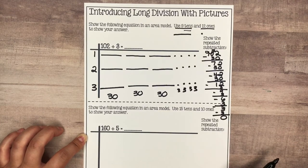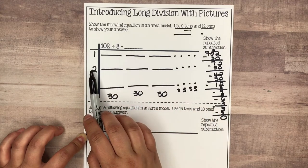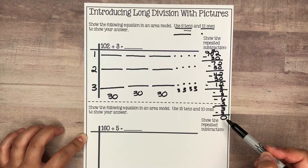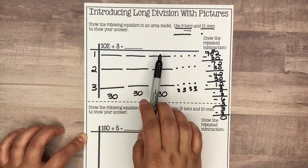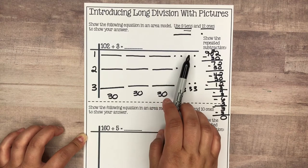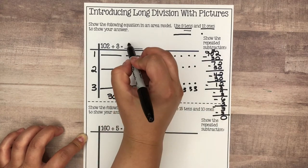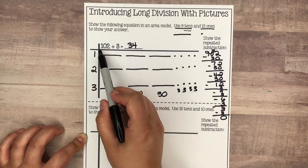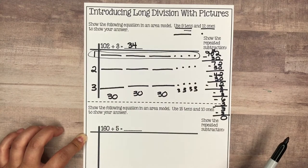Do you see your answer? Remember, you have to read across each group. My groups are equal, I have 0 left over so no remainder. Reading across: 10, 20, 30, 31, 32, 33, 34. 102 divided by 3 is 34. Sometimes, if it helps, you can circle your answer so you can clearly see it.